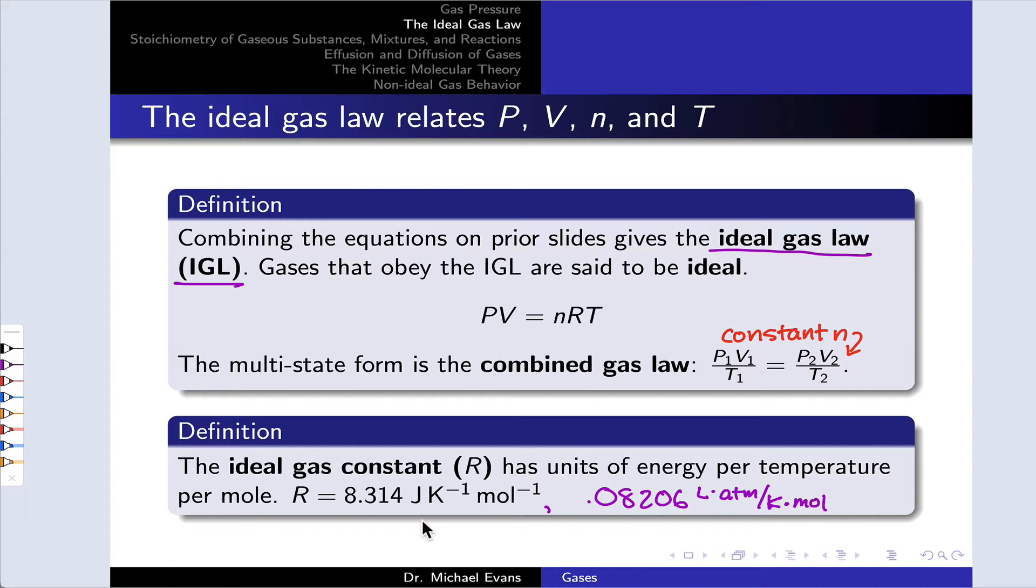Now, if you look at the units of R and you compare the left and right-hand sides of the ideal gas law, and you remember our definition for expansion work way back in the thermochemistry unit, you'll appreciate that the left-hand side of this equation is an energy value. And the right-hand side, of course, must also correspond to an energy value.